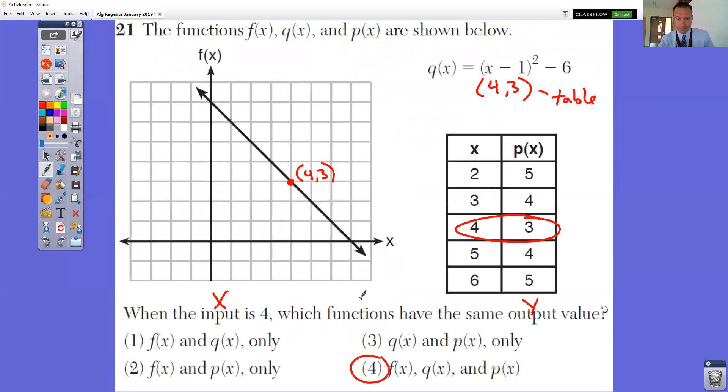Question number 21. The functions are shown below. We have three separate ones. We have a graph, an equation, and a table. When the input, input means X is 4, which functions have the same Y value, the same output value? Well, when X equals 4 here, your Y value is 3. If I go to type this into my Y equals and do second and table, when X equals 4, Y equals 3. And when X equals 4, Y equals 3 according to the table. So all three of them have the same output value.